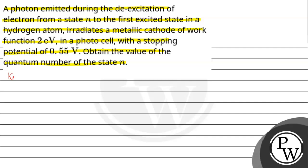Let us have the key concept of the given question. The energy of a photon in hydrogen atom: En = -13.6/n² electron volts.